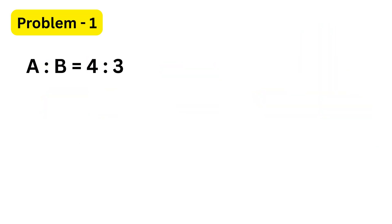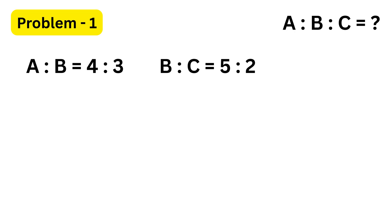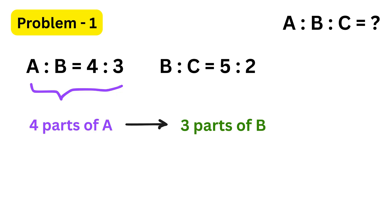We are told that the ratio of A to B is four to three, and that of B to C is five to two. We need to find the combined ratio of A to B to C. The first ratio, A to B equals four to three, tells us that for every four parts of A, there are three parts of B.